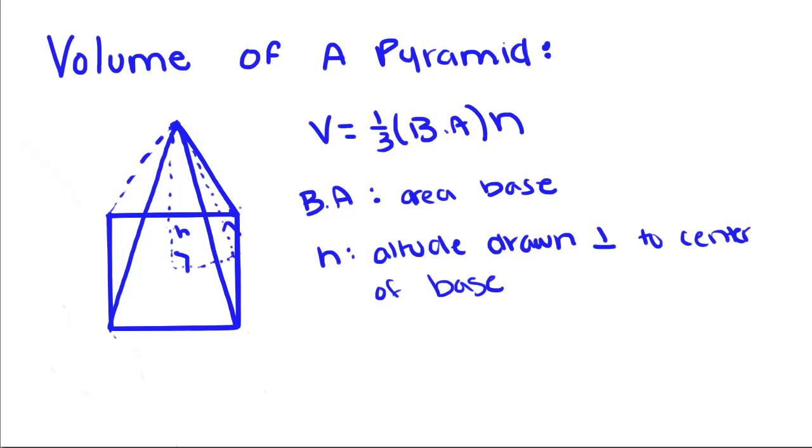Now that we've learned the surface area of a pyramid, we're going to learn how to find the volume of a pyramid. The formula for volume of a pyramid is V equals one-third base area times height.